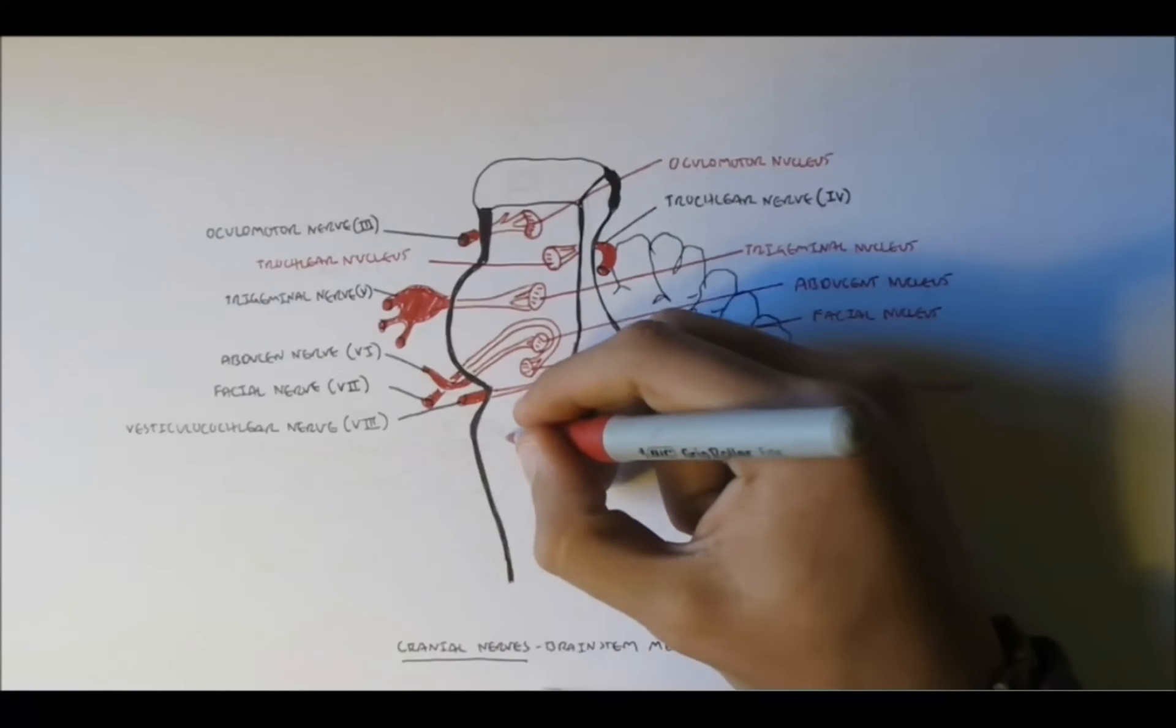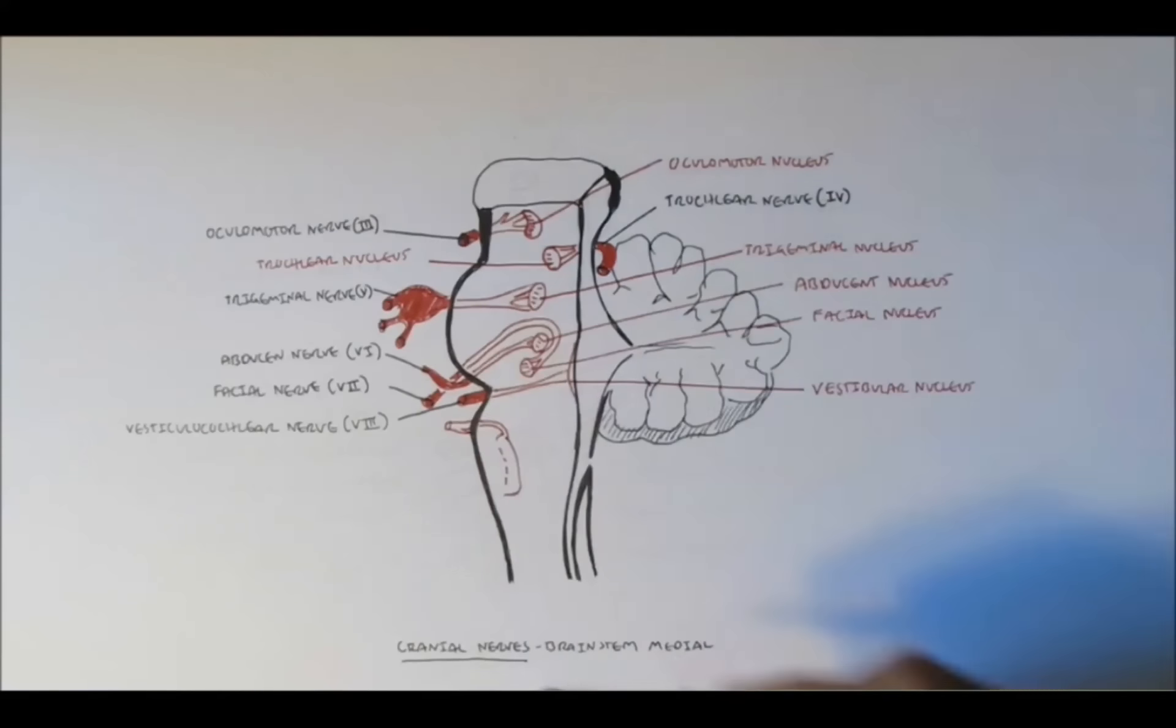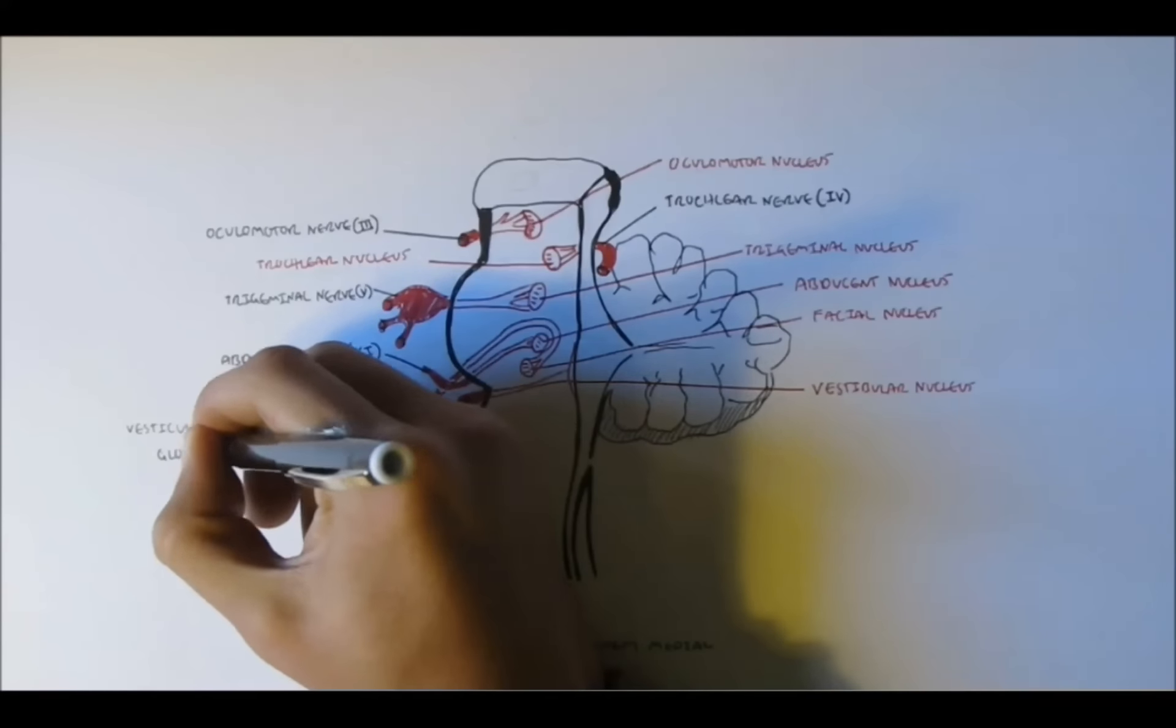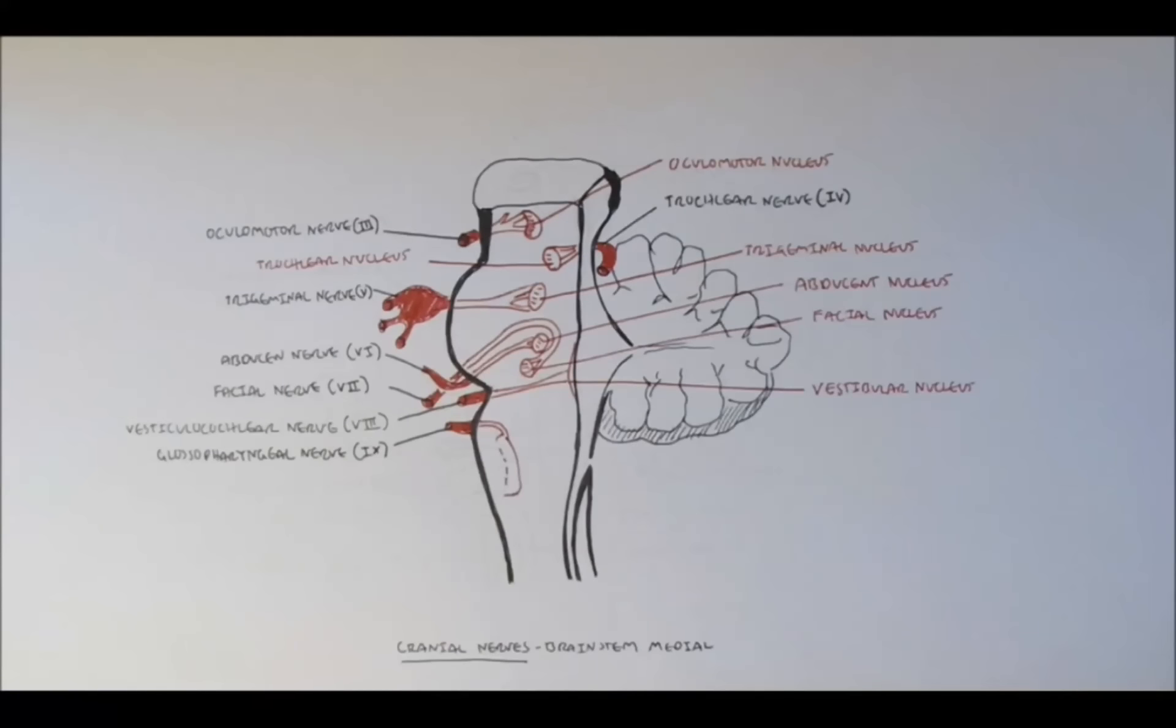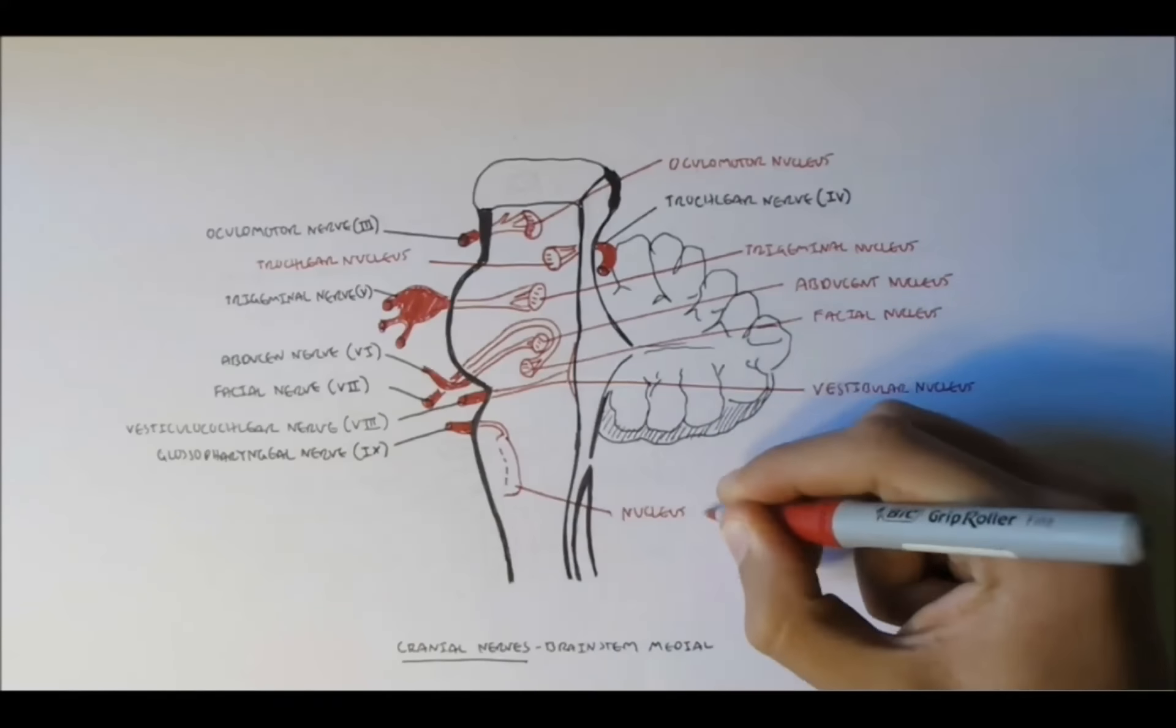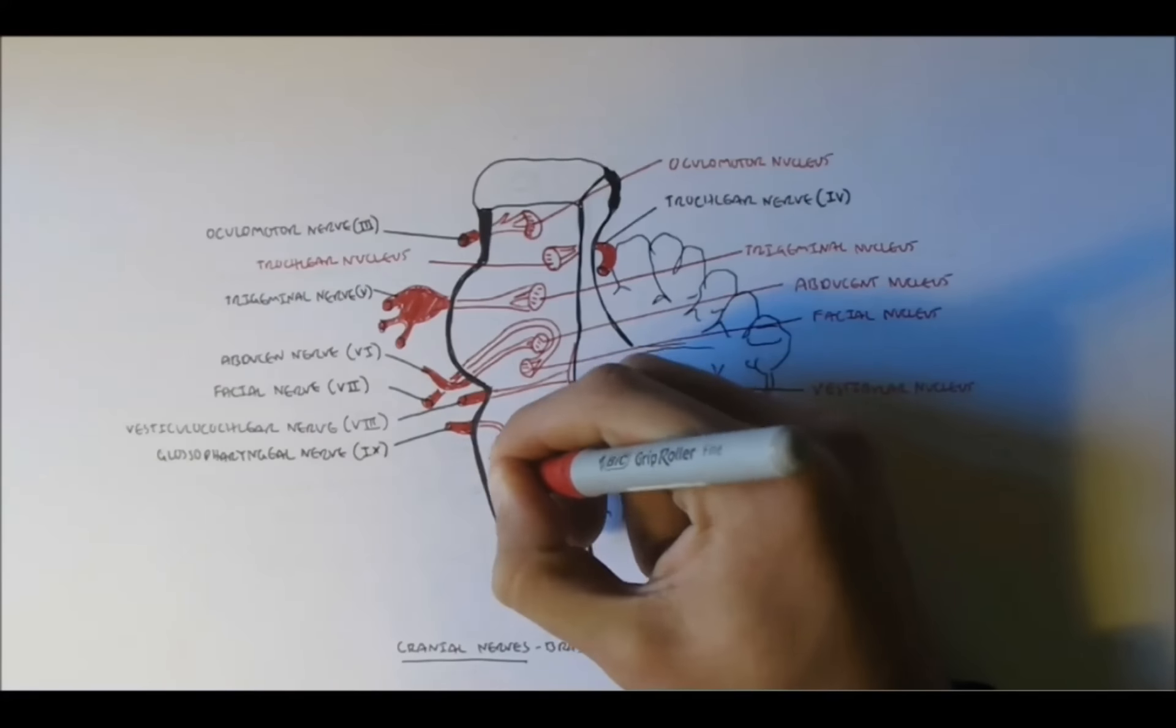Just where the medulla oblongata is, we have protruding out the glossopharyngeal nerve, nerve 9. And it comes in contact with the nucleus referred to as the nucleus ambiguus. The vagus nerve, nerve 10, is also connected to this nucleus.